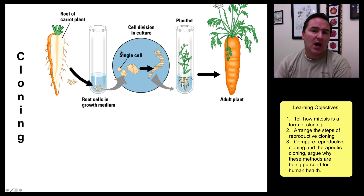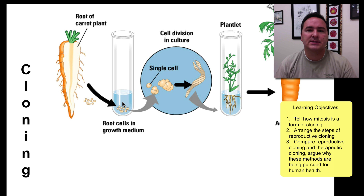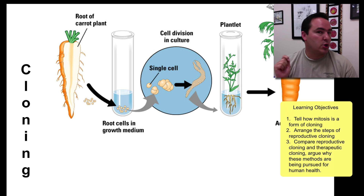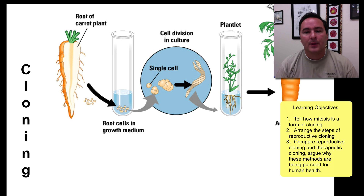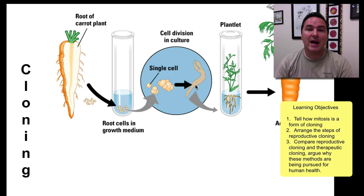Before we've actually talked about asexual reproduction, which is a type of cloning. So look at this carrot. If I take some cells from the root tips of these carrots, these cells can be placed in a growth medium. These cells are special in a sense that they have not necessarily been differentiated for any particular tissue type in the carrot. You can put these cells in a growth medium and as they grow, they just continue to undergo the process of mitosis.